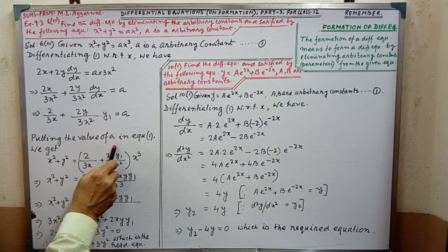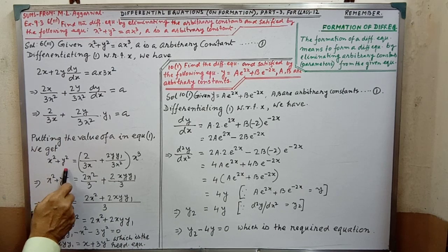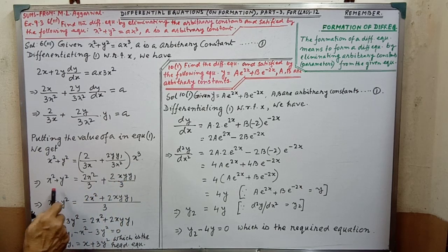So, x squared plus y squared, in place of a, we are writing the value of a. Then, we have to simplify in this way. After simplifying,